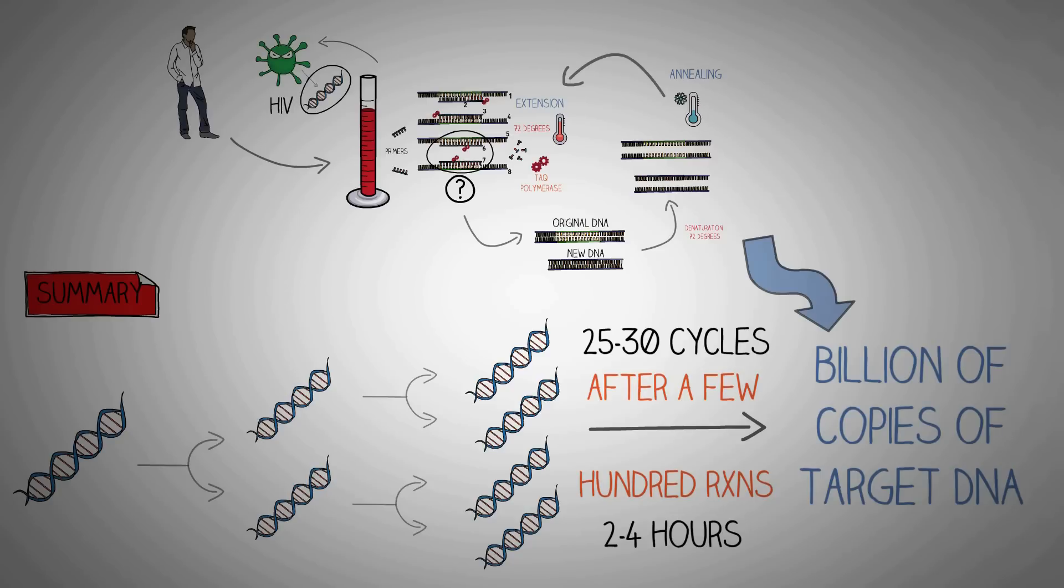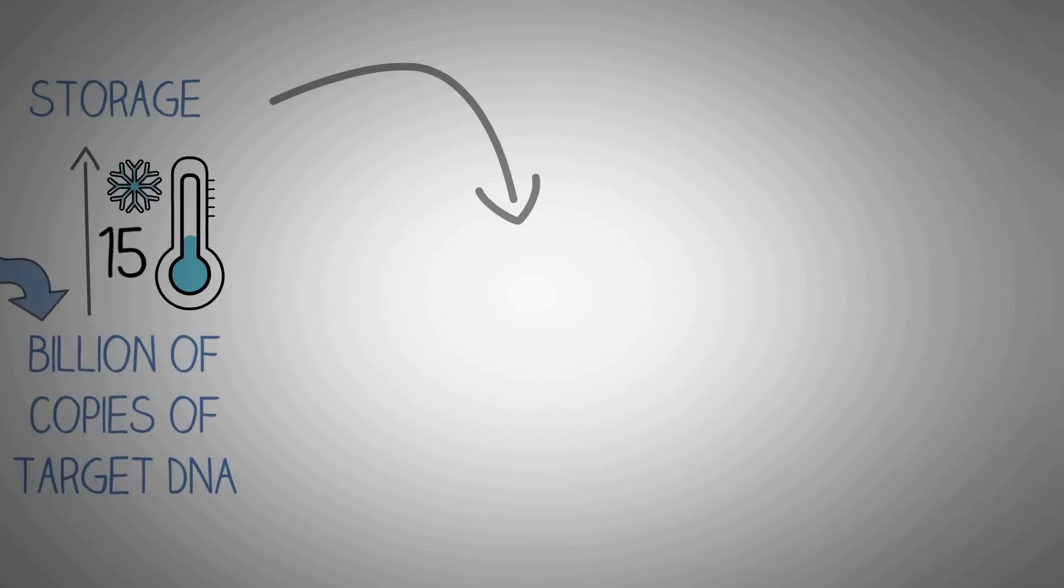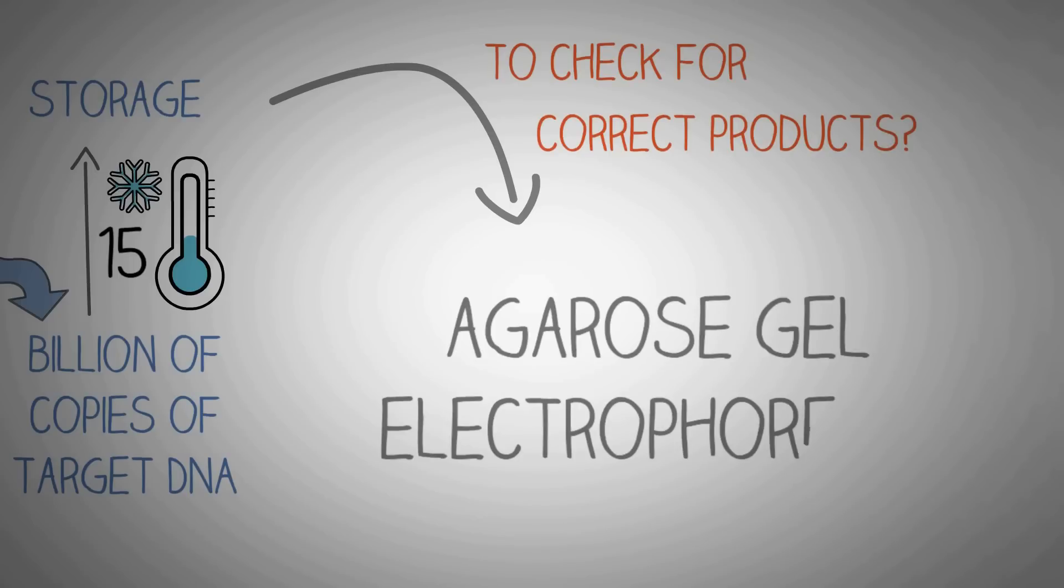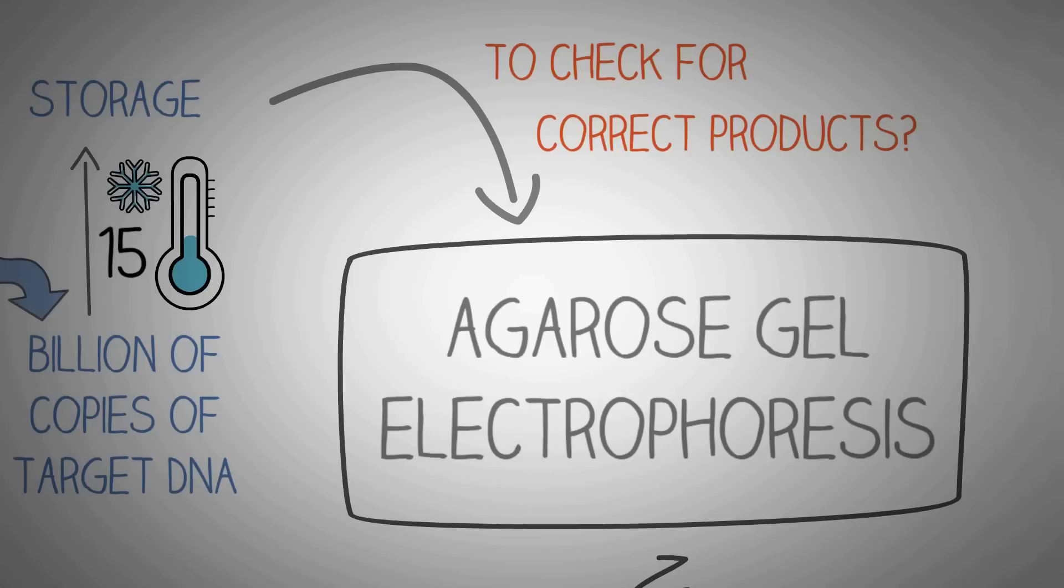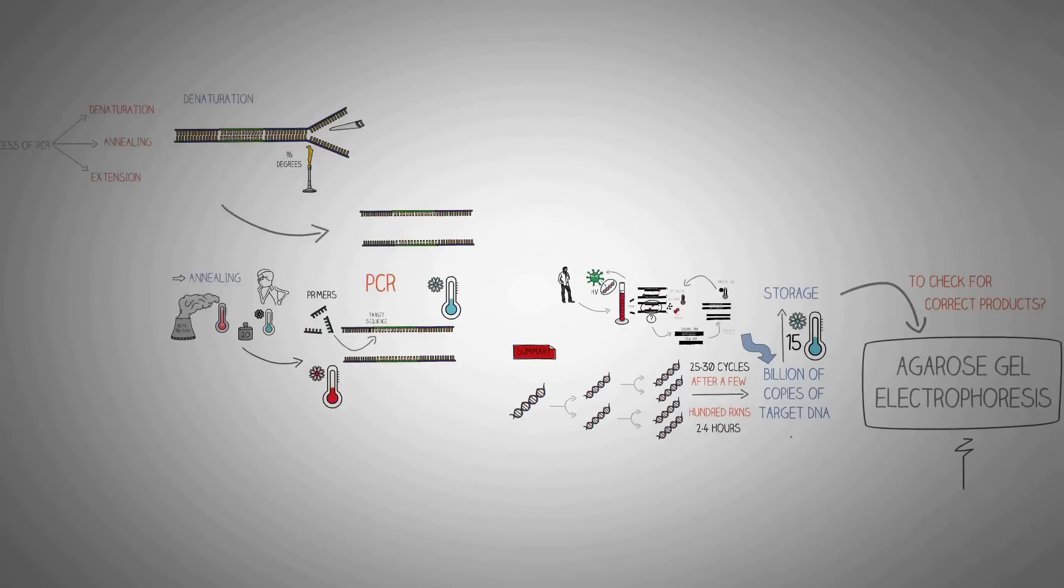After this, the temperature is again lowered to 15 degrees so that the products of the reaction can be stored. To check whether the PCR has generated the correct products, we use a technique known as agarose gel electrophoresis, which is a topic for another video.